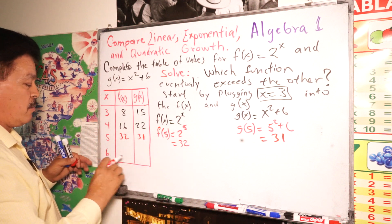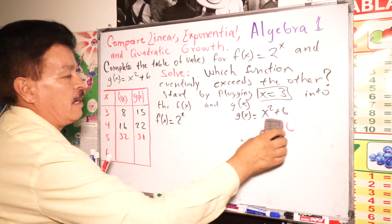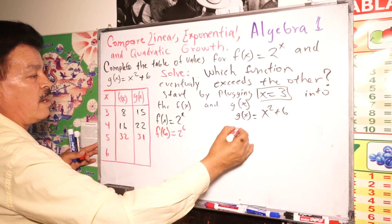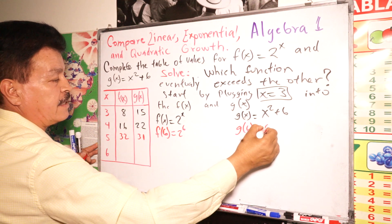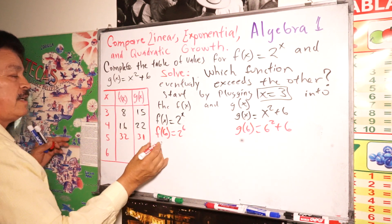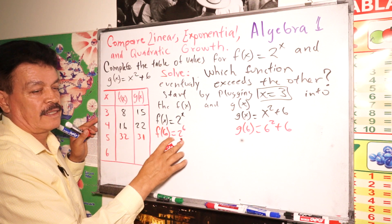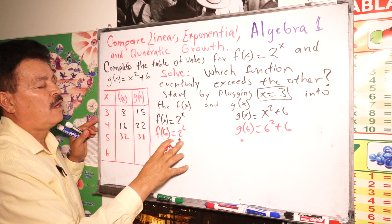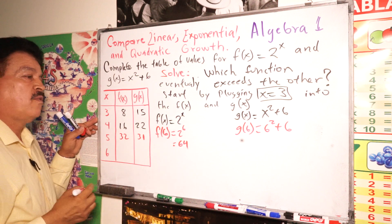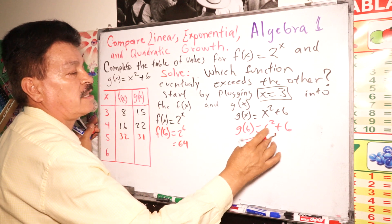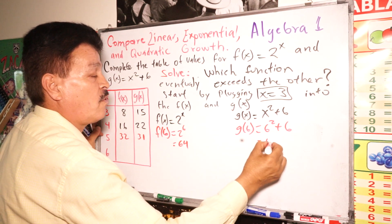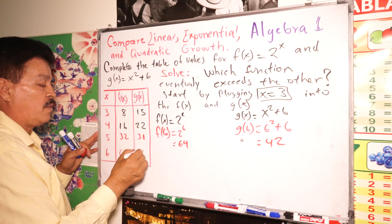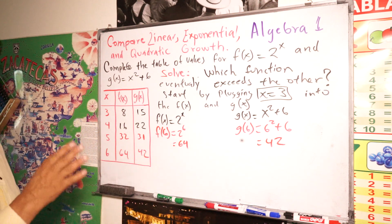Next value is x = 6. f(6) equals 2 to the sixth power, and g(6) equals 6 to the second power plus 6. So f(6) = 64, and g(6) equals 36 plus 6, which is 42. So the table is now complete with all the right values.